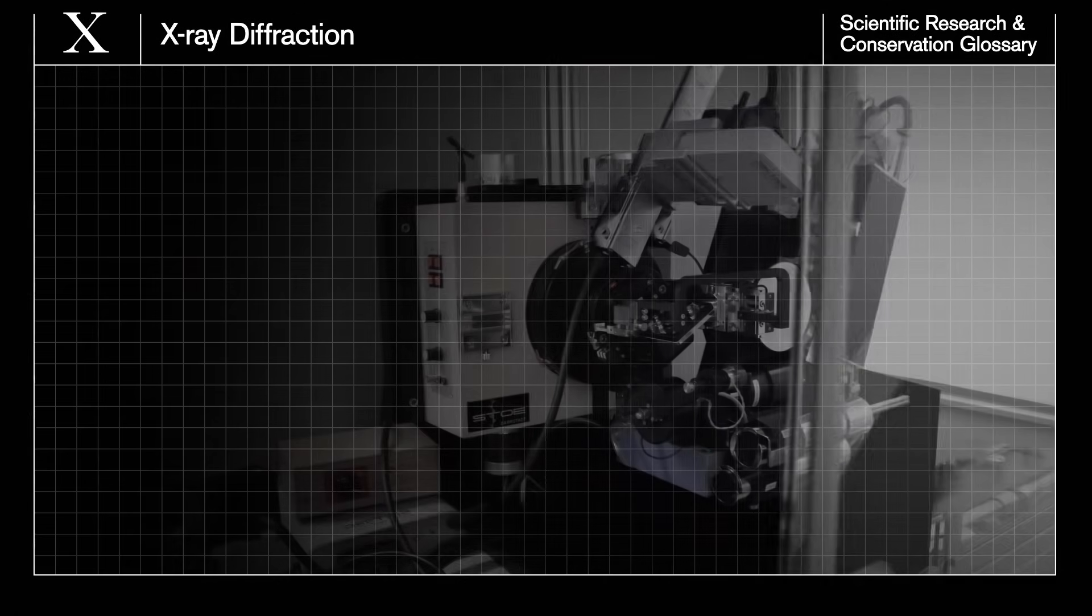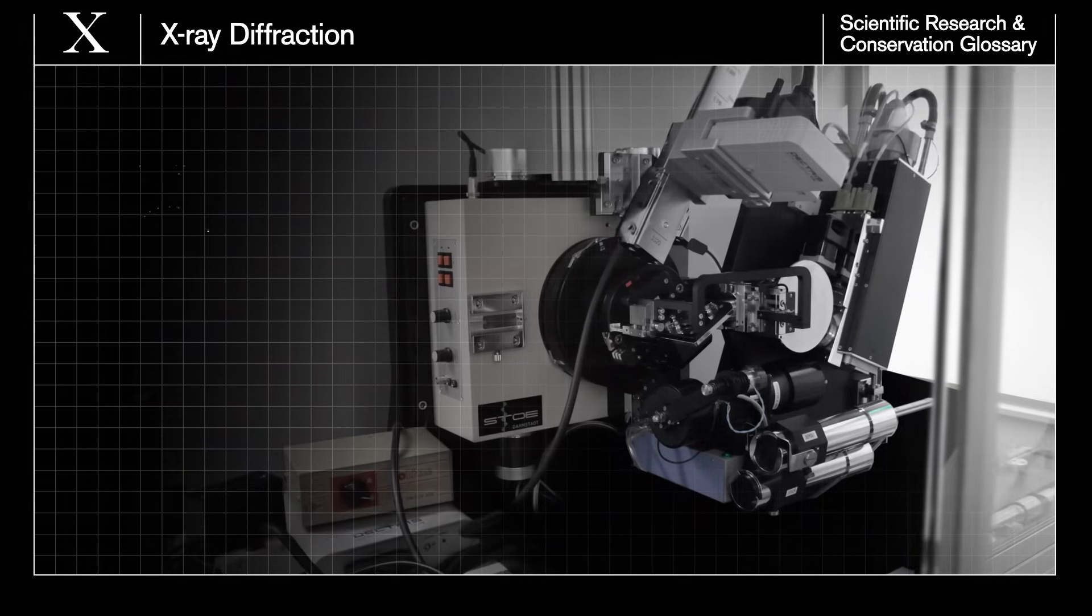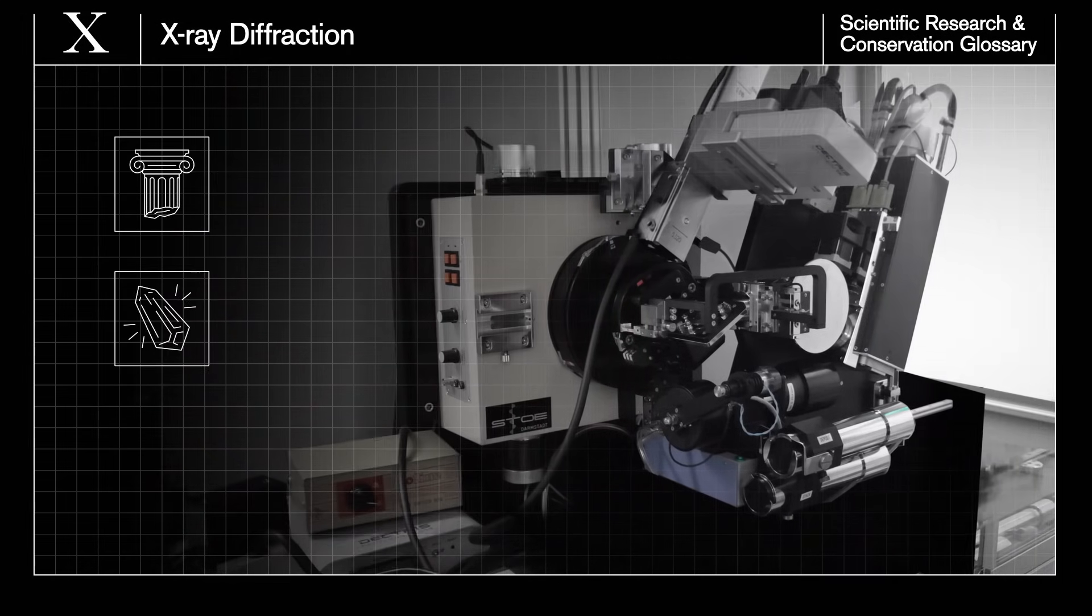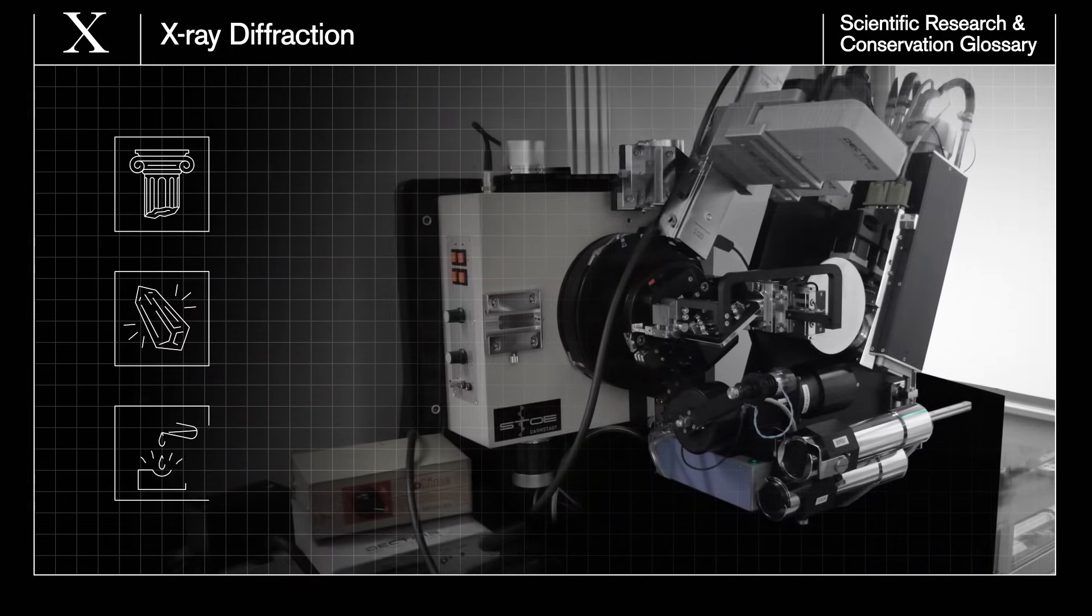X-ray diffraction is used to identify material with a crystal structure, such as stone or minerals. It can also be used to identify corrosion.